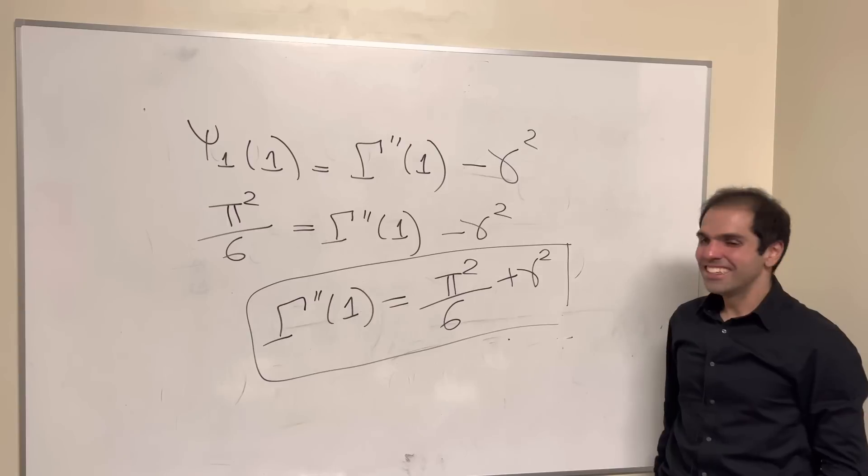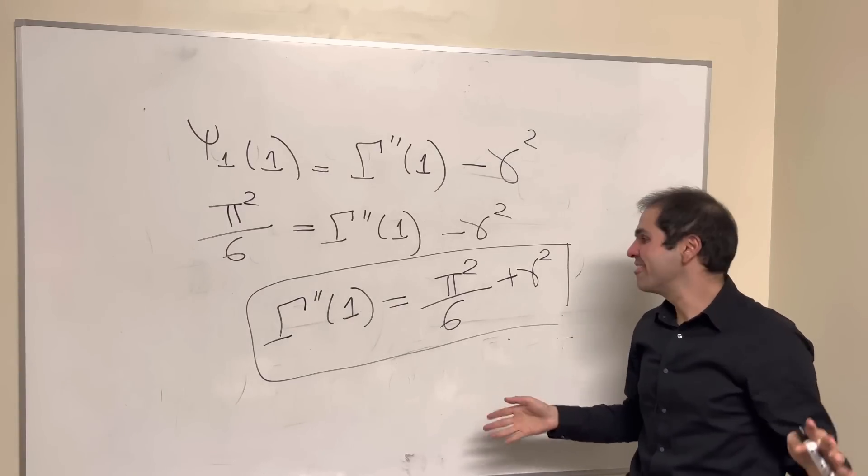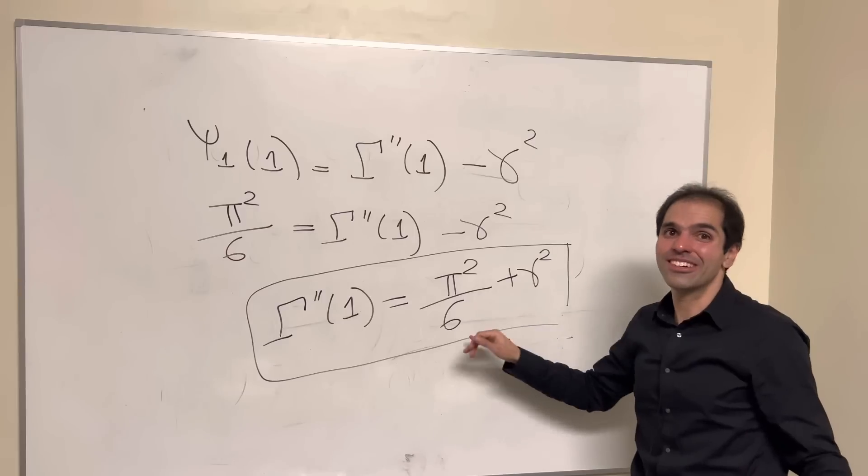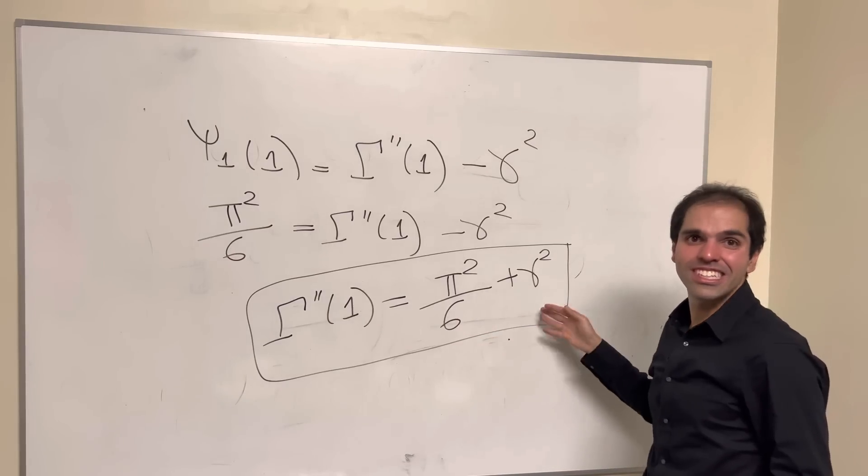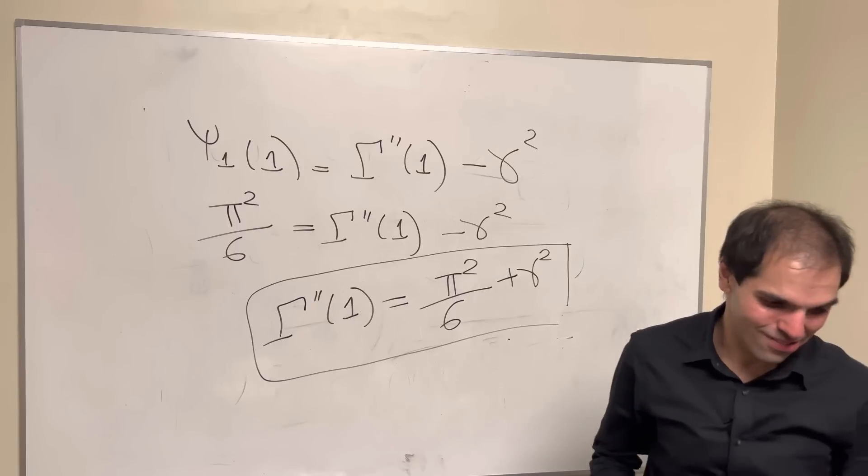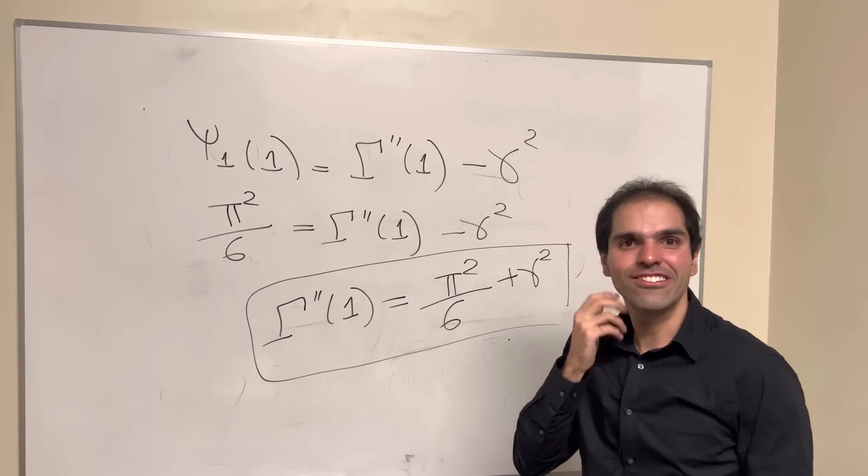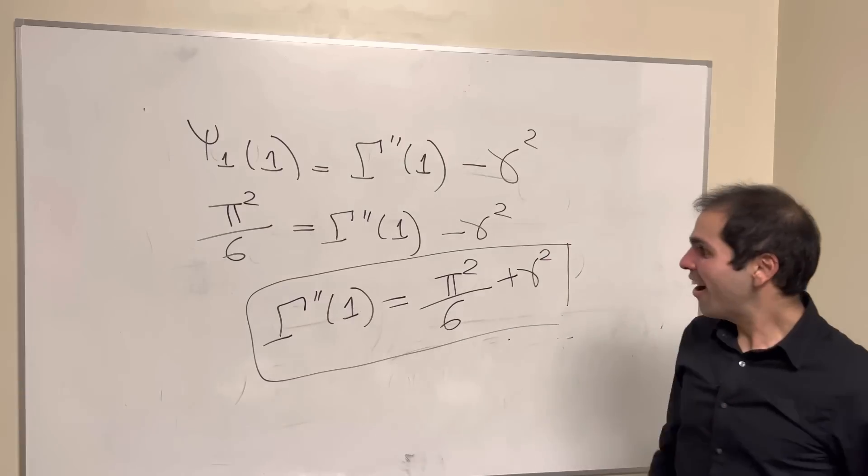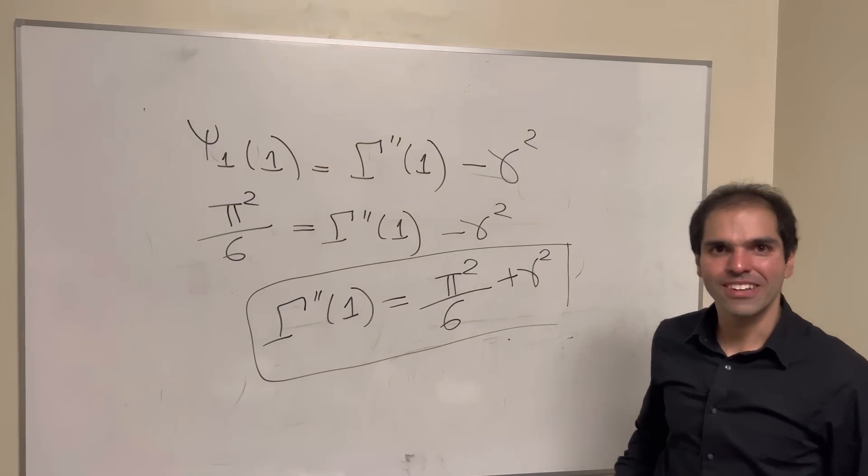Wow. I mean, they say the most beautiful formula is e to the i pi equals minus 1, but I mean, this comes close second, I would say. So who would have thought that the zeta 2 series appears and Euler-Mascheroni? I mean, really, the gamma function is something quite mysterious, I must say. All right, I hope you liked this. If you want to see more math, please make sure to subscribe to my channel. Thank you very much.